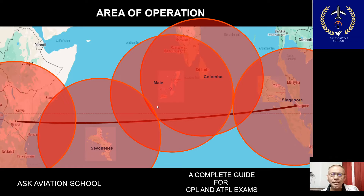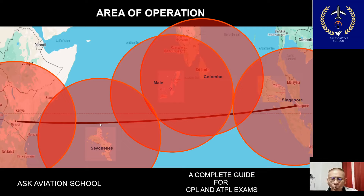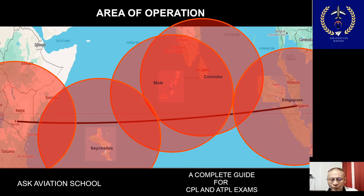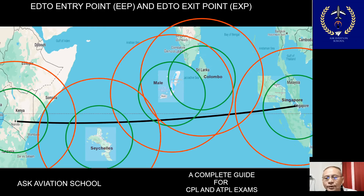The significance of the area of operation is that the aircraft must stay within it at all times — it can never go outside. However, within the area of operation, depending on in-flight situations, the captain may change the planned flight level, planned speed schedule, or time. For example, if the planned speed schedule was VMO/MMO and the aircraft encounters severe turbulence during diversion, the captain must reduce speed to turbulence penetration speed, which may result in a diversion time exceeding the authorized 90 or 120 minutes — and this is permitted by the regulator.